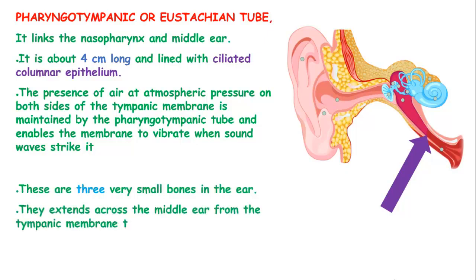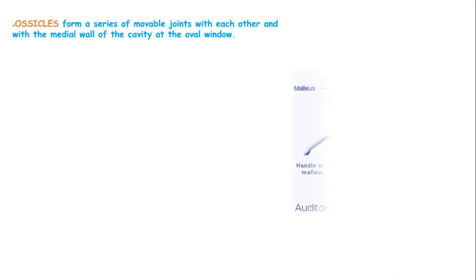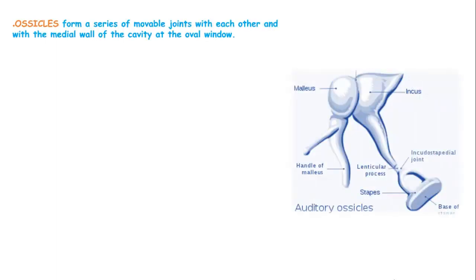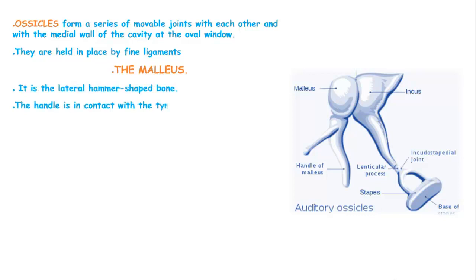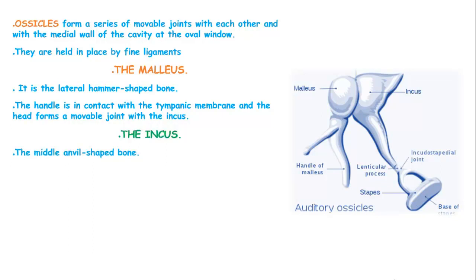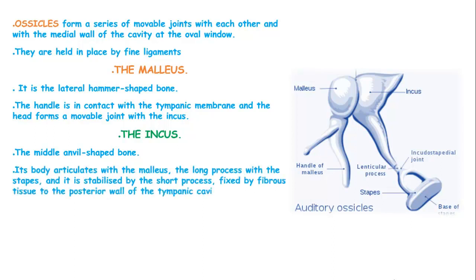There are three very small bones in the ear known as the ossicles, and they extend across the middle ear from the tympanic membrane to the oval window. They form a series of movable joints with each other and with the medial wall of the cavity at the oval window, held in place by fine ligaments. The malleus is a lateral hammer-shaped bone; its handle is in contact with the tympanic membrane and the head forms a movable joint with the incus. The incus is a middle anvil-shaped bone; its body articulates with the malleus and the long process with the stapes, and is stabilized by the short process fixed by fibrous tissue to the posterior wall of the tympanic cavity.